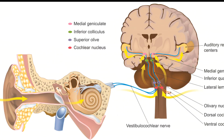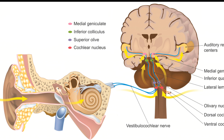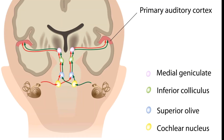Once the hair cells in the cochlea have transformed sound vibrations into electrical signals, these signals embark on a journey to the brain via the auditory nerve. This nerve acts as a high-speed highway, ensuring the swift transmission of auditory information. It carries encoded information about the frequency, intensity, and timing of sounds, with each piece of data meticulously preserved. The auditory pathway is complex, involving several relay stations in the brain stem before the signals reach their final destination — the auditory cortex. These relay stations act as checkpoints, refining and processing the signals.